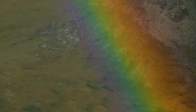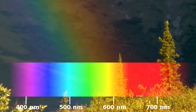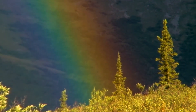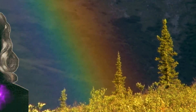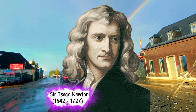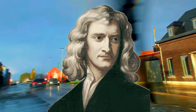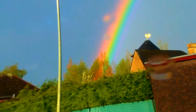Rainbows span a continuous spectrum of colors. For colors seen by the human eye, the most commonly cited and remembered sequence is Isaac Newton's sevenfold: red, orange, yellow, green, blue, indigo, and violet.